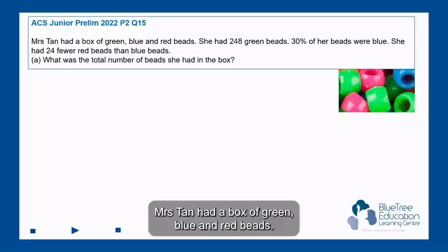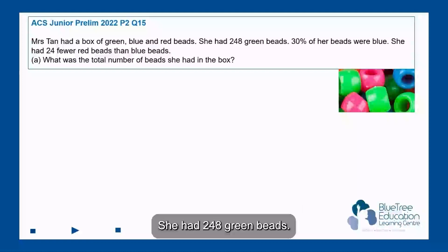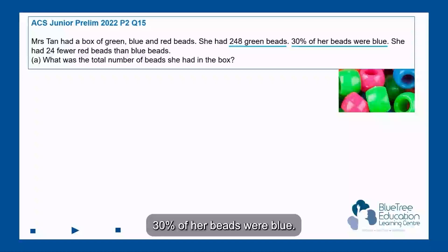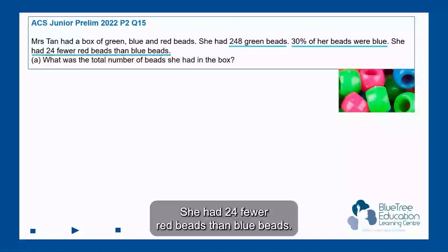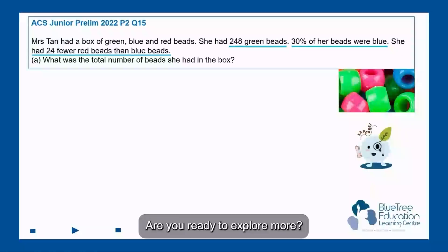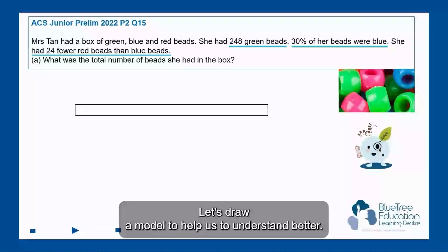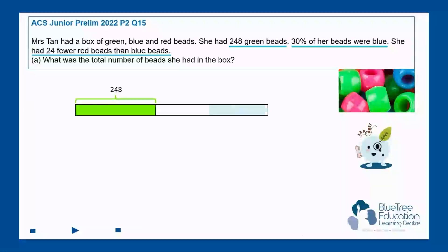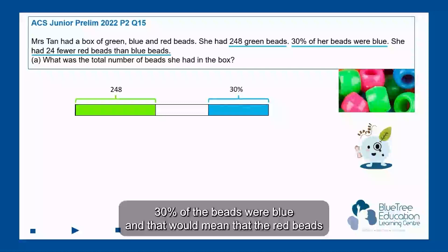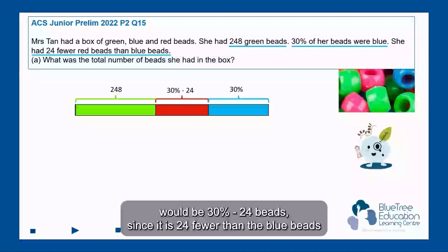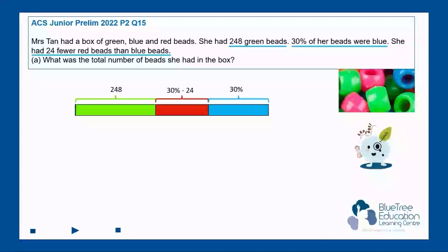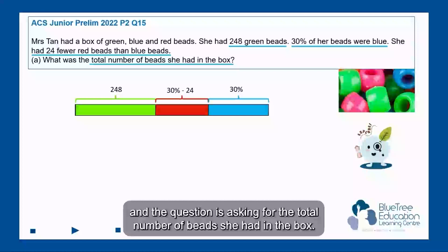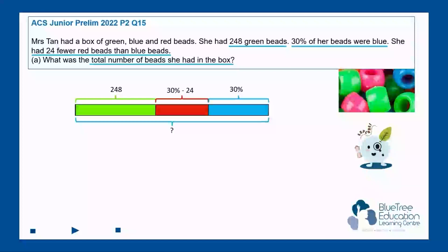Mrs Tan had a box of green, blue, and red beads. She had 248 green beads, 30% of her beads were blue, and she had 24 fewer red beads than blue beads. The question is asking for the total number of beads she had in the box. Let's draw a model to help us understand better.